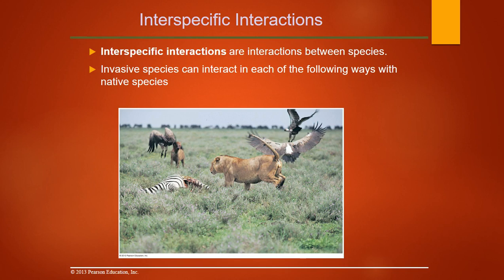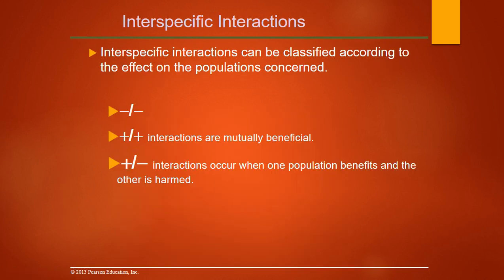Something important to discuss is interspecific interactions — how different species interact together — so we can understand the ways invasive species affect native species. In this picture we see predation, where one organism is eating another, and competition between predators. We classify these interactions based on whether both lose, both win, or one wins and the other loses.